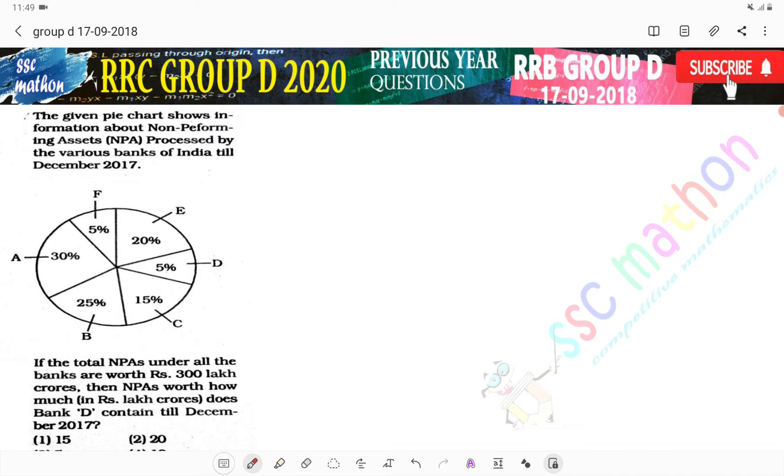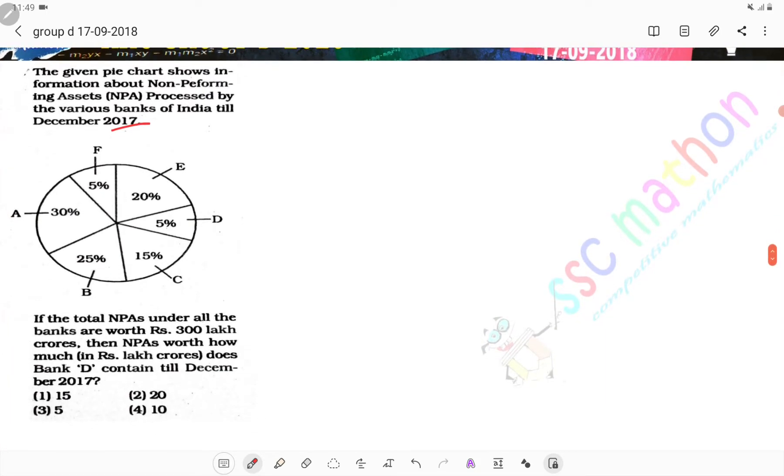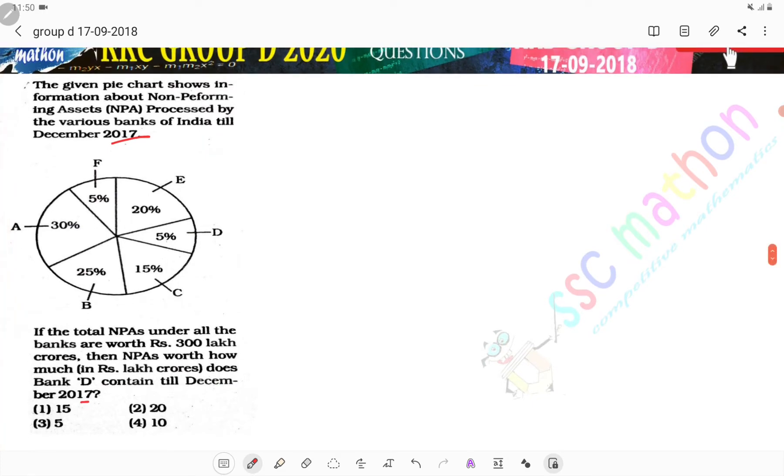The given pie chart shows information about non-performing assets (NPA) processed by the various banks of India till December 2017. If the total NPAs under all the banks are worth Rs. 300 lakh crore, then the NPAs worth how much does bank D contain till December 2017? To D ka kitna hai sir?